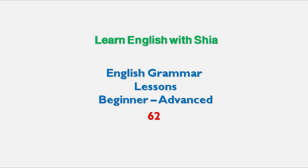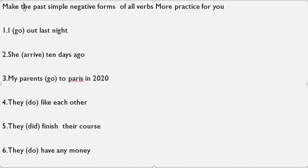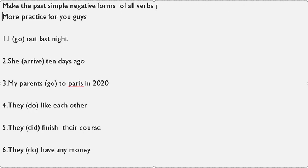Welcome back guys, welcome to Learn English with Shia, lesson 62. Let's continue with me. Again, possible negative forms — make the possible negative forms of all verbs. More practice for you guys.